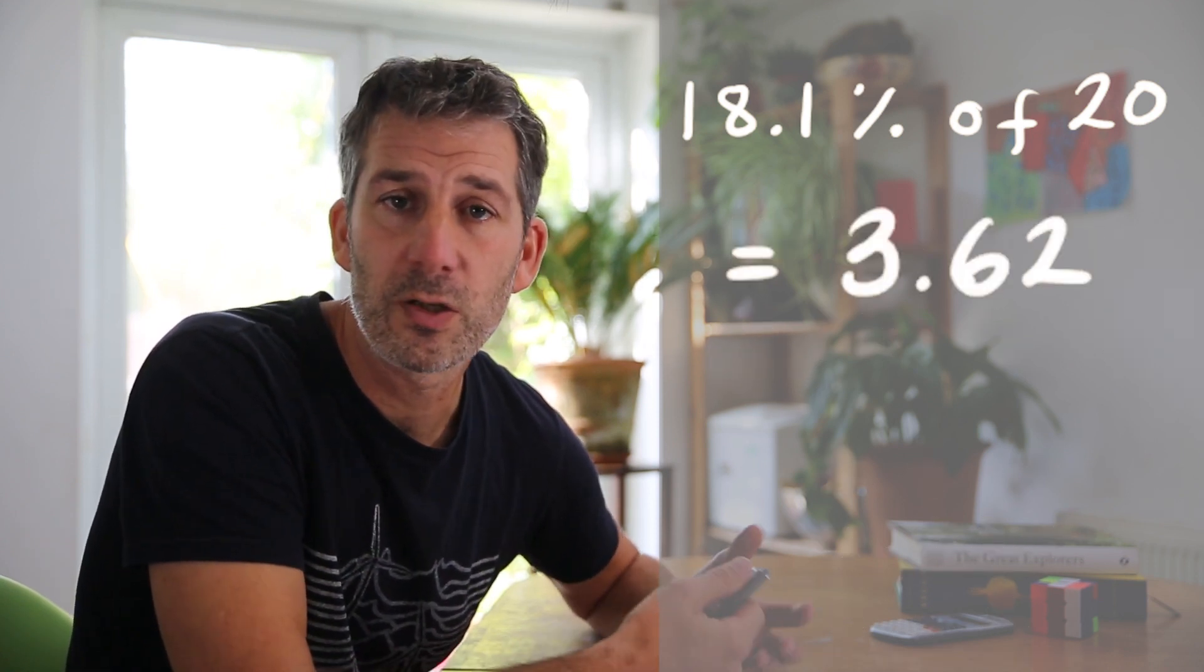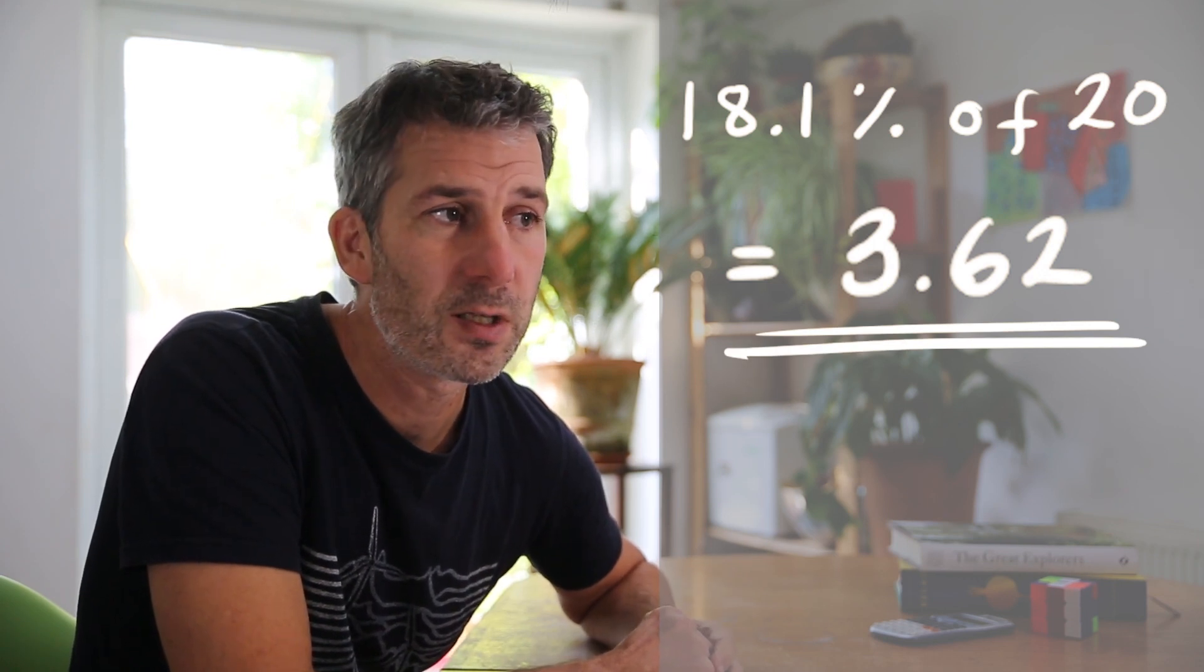And then once you've done that, you can just use all the other methods that we've used. So if I wanted to find 30.7% of something, I would find 30%, and then I could find 0.1% and just times that by 7 to get my 0.7%, and add it on.